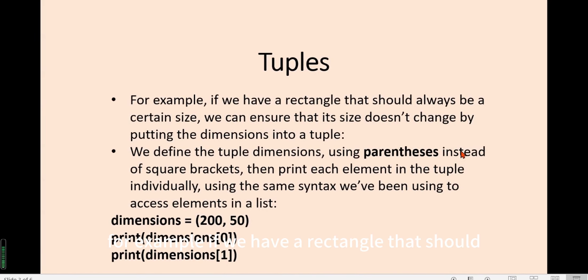For example, if we have a rectangle that should always be a certain size, we can ensure that its size doesn't change by putting the dimensions into a tuple. We define the tuple dimensions using parentheses instead of square brackets, then print each element in the tuple individually using the same syntax we've been using to access elements in a list.